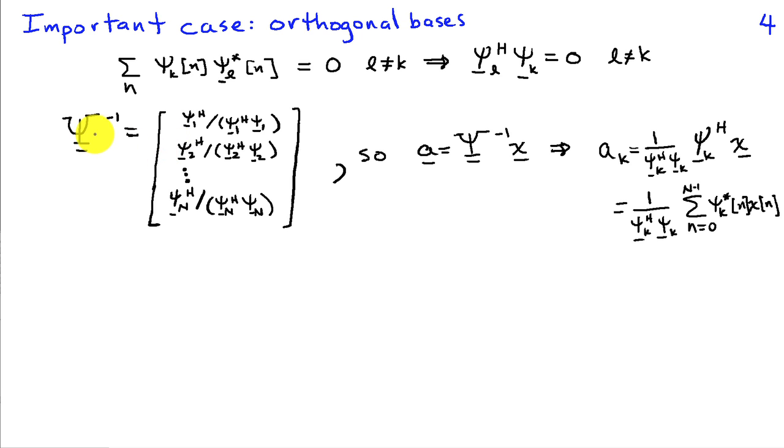If that's true, then it turns out that psi inverse can just be represented in terms of the original psi's, psi 1, complex conjugate transpose, normalized by the squared length of psi 1. And then in the second row we have psi 2, complex conjugate transpose, normalized by the squared length of psi 2, and so on. And you can verify that if I multiply this matrix, psi, which I'm calling psi inverse, times psi, I'll get back the identity matrix. And that's a consequence of psi 1 hermitian times psi 2 being equal to 0, and so on.